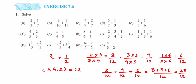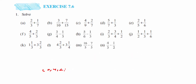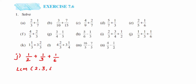For problem J, the same procedure applies but with different numbers. We take the LCM of 2, 3, and 6. The problem is 1 by 2 plus 1 by 3 plus 1 by 6. The LCM of 2, 3, and 6 is 6. If you do not know the LCM, you can work it out separately, but it is not necessary to show the working if you already know the answer.